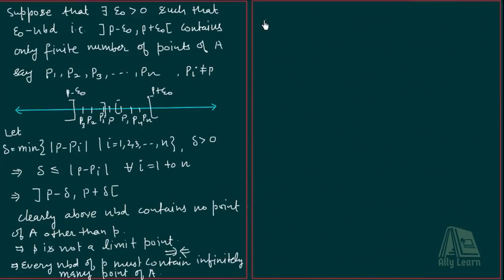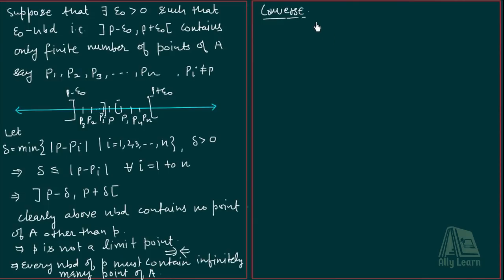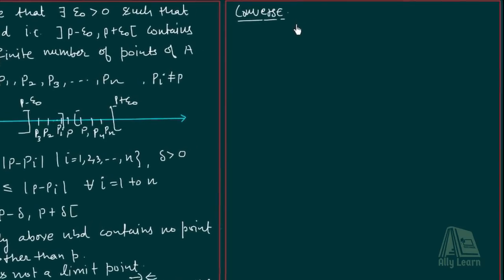Now converse part dekhte hain. Converse ke liye kya show karna hai? Ki agar har ek neighborhood mein infinitely many points hain, then P is a limit point. Ye toh obvious hai ki agar har ek neighborhood mein infinitely many points hain, toh uske har ek neighborhood mein kam se kam ek point bhi hoga. So, by definition, it must be a limit point.